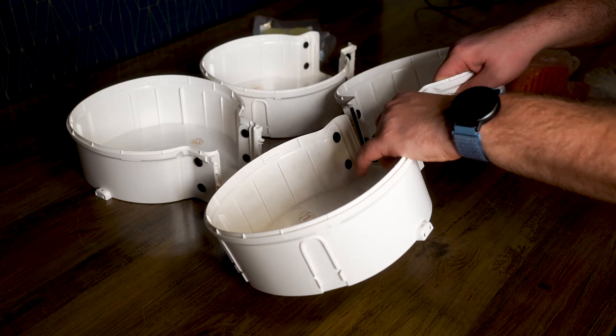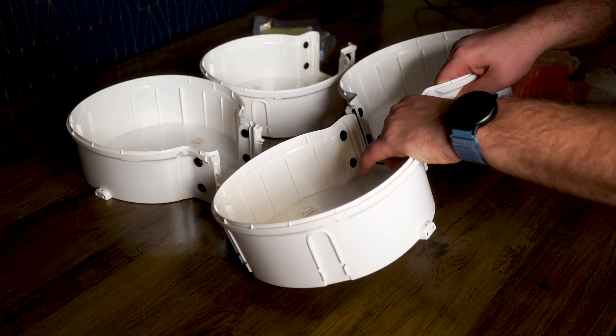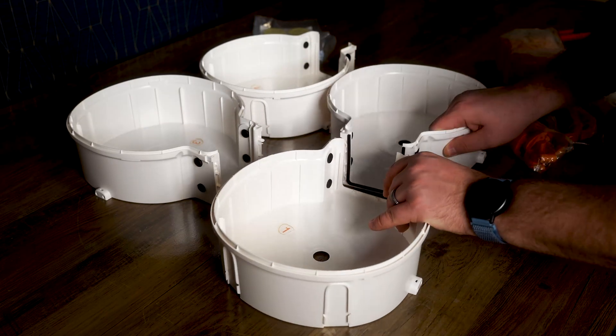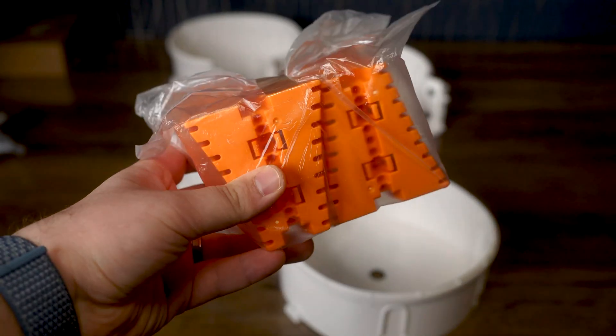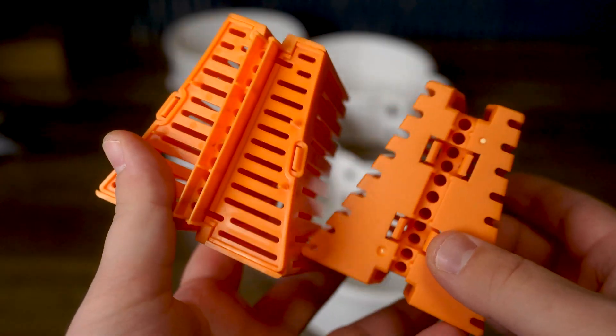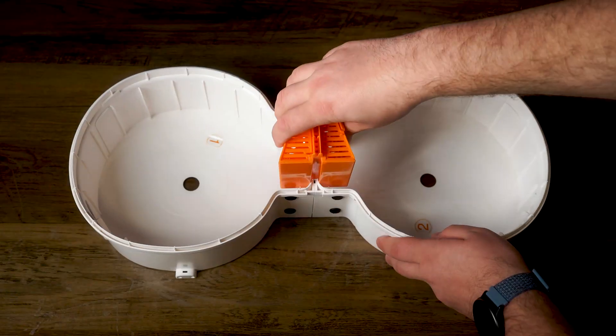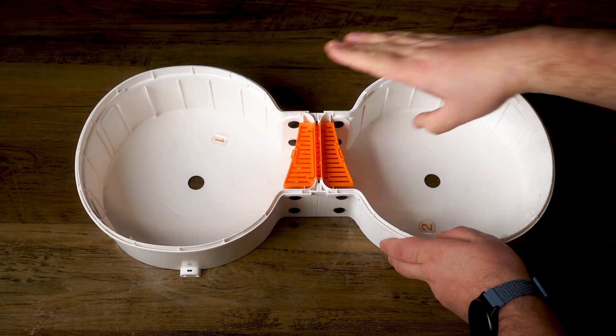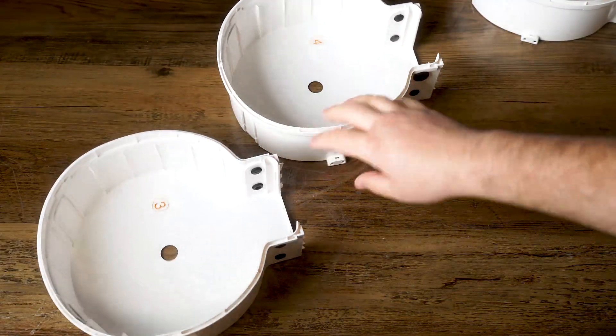We will take the covers numbered one and two and join them together, making sure they're all aligned. These two covers will be secured using this drying box where your silica bags will be stored. Press down on the drying box so it securely latches the two covers. Repeat the same process for covers three and four.